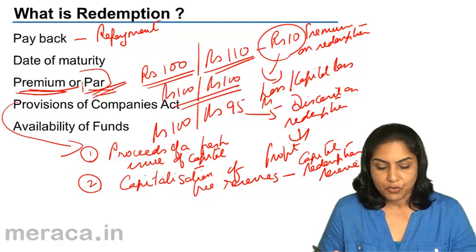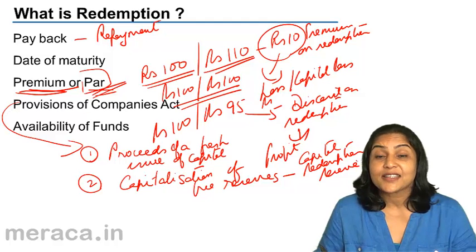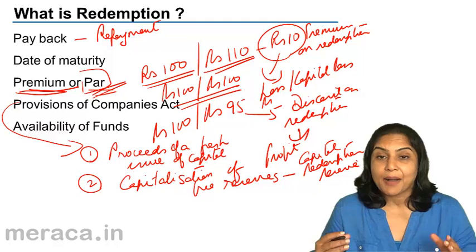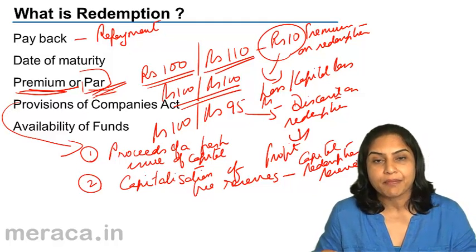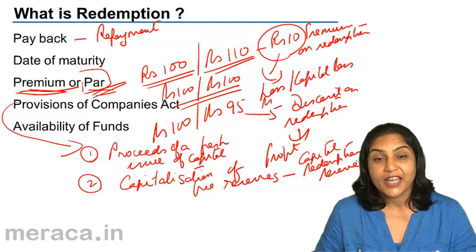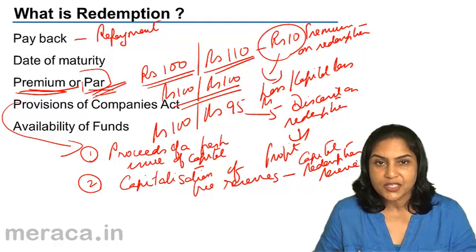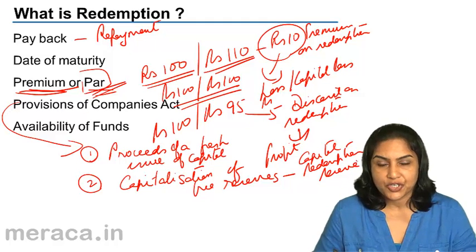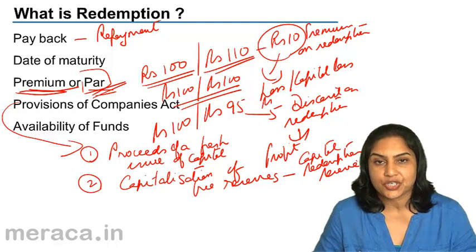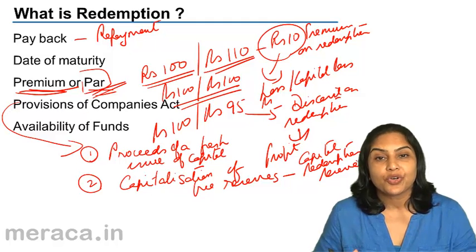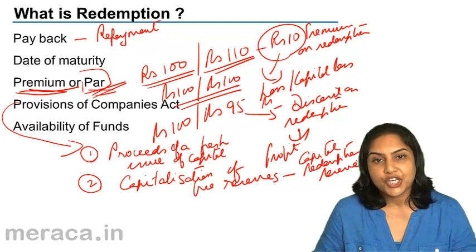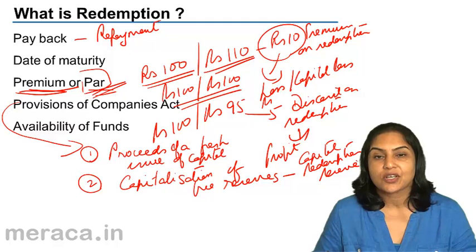We will further discuss this in more detail. The other aspect of redemption of preference shares is the availability of funds. When we are repaying preference shares, the company needs to have enough money — enough bank balance — to be able to repay the shareholders. If they issue fresh equity shares or fresh preference shares, money comes in and this money can be used to redeem preference shares. They may also issue fresh debentures to raise money, or they may sell some of their assets or investments in order to raise money.